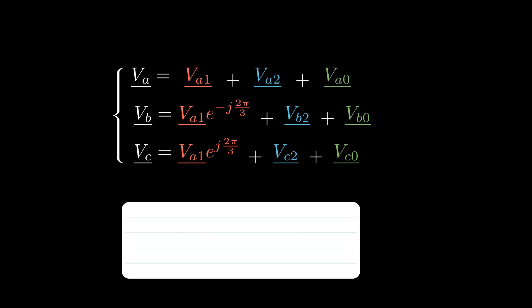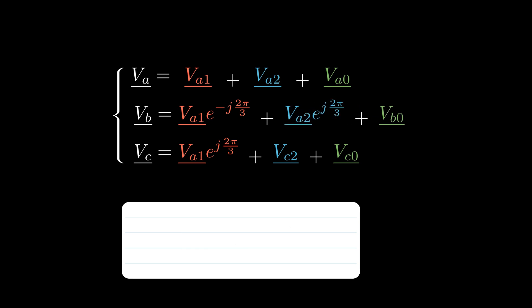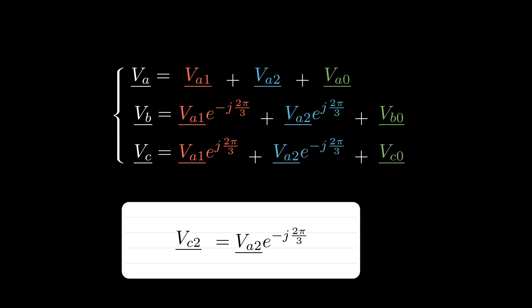Next, for the negative sequence, phase B leads phase A by 2π/3. We can do the replacement, and phase C lags by 2π/3, and we can replace it in the equation.